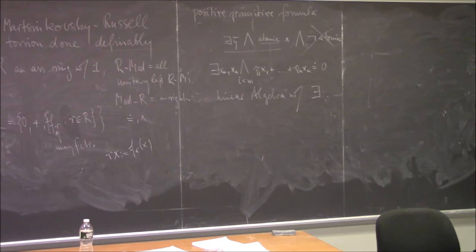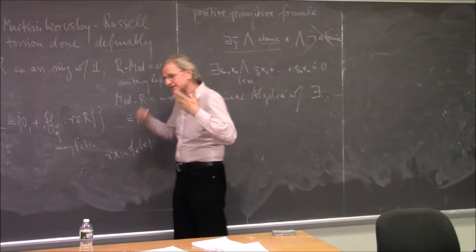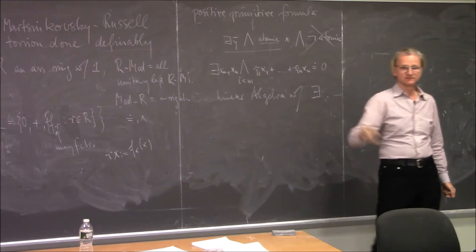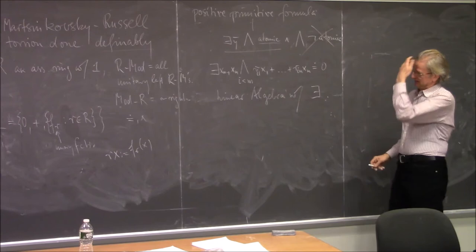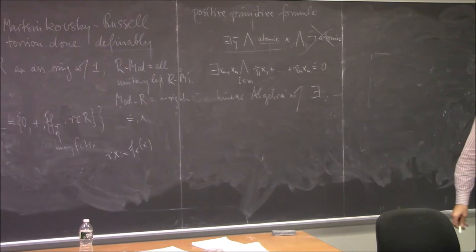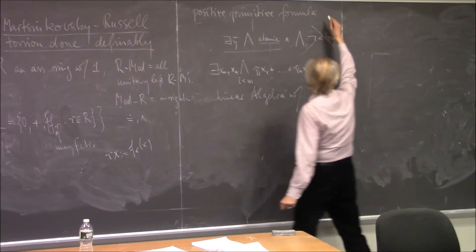That's what model theory of modules is: it's linear algebra with projections. There's a general result — which we don't need but it's good to know — that every formula in this language is, modulo the entire category, equivalent to a Boolean combination of such PP formulas: disjunctions of conjunctions of PP and negated PP formulas. That explains why in the whole model theory of modules only these really play a role.